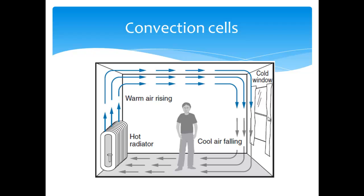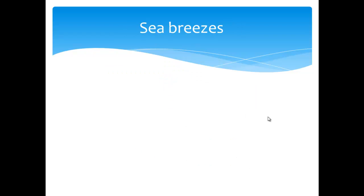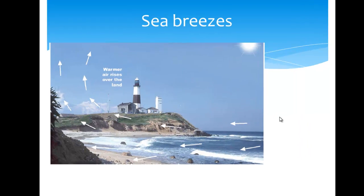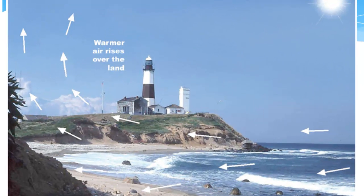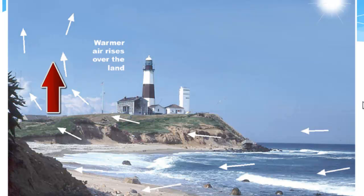Convection cells can happen in areas like on the sea coast as well. Living on the Gulf Coast, you've probably experienced sea breezes. This is a localized wind that occurs due to the differential heating of a large body of water and the land next to it. Water has a higher specific heat than land, so it takes more energy to heat up water than land. During the day, the surface of the land heats up more than the water, and the warmer air over the land rises, pulling in a cooling breeze off the ocean.